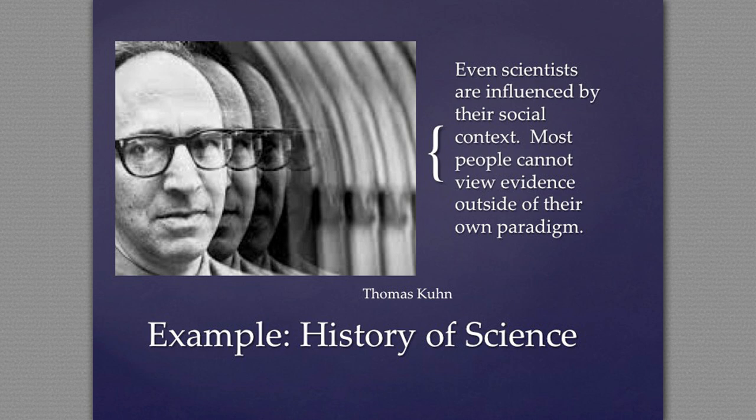Thomas Kuhn wrote about the history of science and found that scientists — people who really value impartiality and seem not to be focused on social or political events — were shaped by the world in which they lived. He found that scientists tend to reconfirm the same knowledge over and over until a major shift occurs in the social, political, or scientific world. Albert Einstein totally changed the way scientists operate, but then everybody operated under Einstein's paradigm. So we can see that we can't get to the truth, just like scientists can't, because we're shaped by our own ideas.